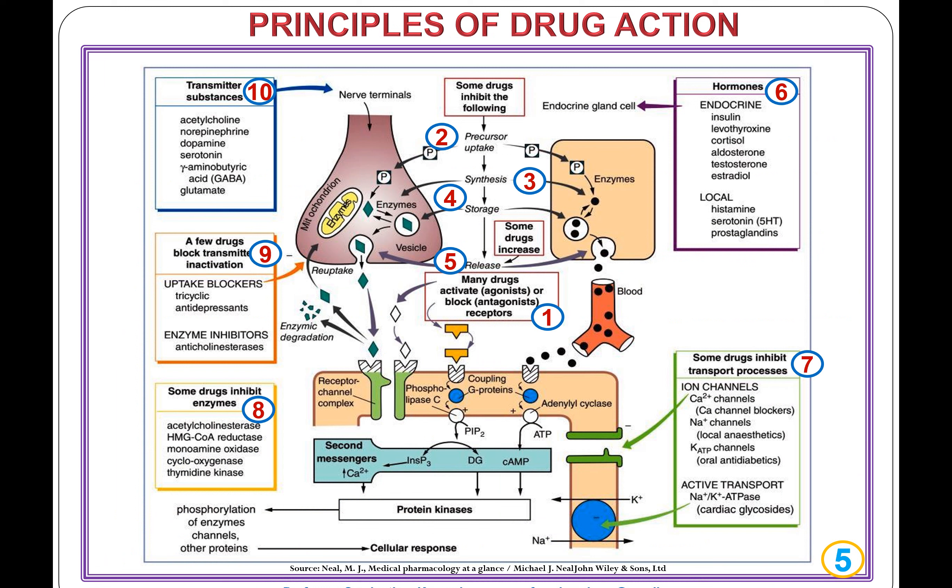Principles of drug action. Drugs produce action through various principles. Principle 1: many drugs activate the receptor, known as agonists, or block the receptor, known as antagonists. Principle 2: some drugs inhibit precursor uptake. Principle 3: some drugs inhibit synthesis. Principle 4: some drugs inhibit storage. Principle 5: some drugs inhibit release.